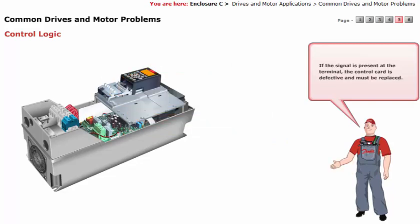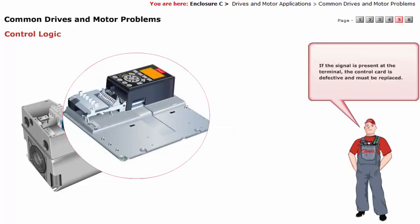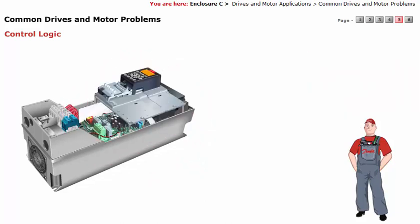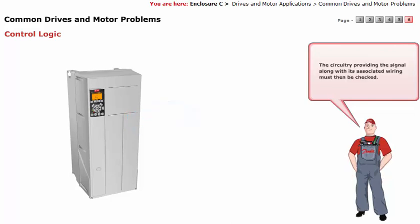The presence of a correct reading indicates that the desired signal is detected by the microprocessor of the drive. If the signal is present at the terminal but there is no correct indication, the control card is defective and must be replaced. If the signal is not present, the problem is external to the drive, and the circuitry providing the signal, along with its associated wiring, must then be checked.